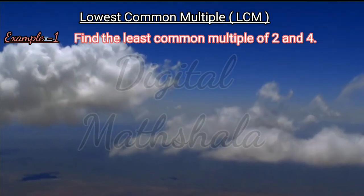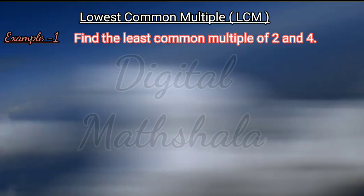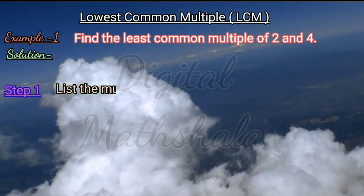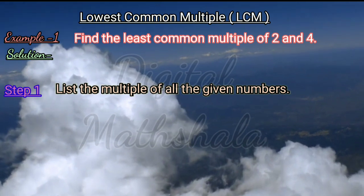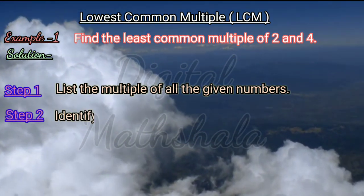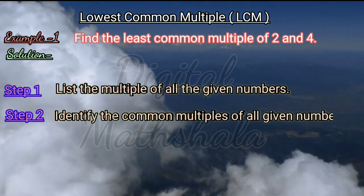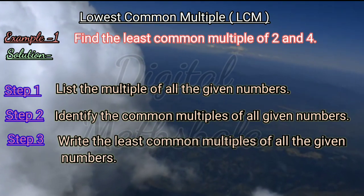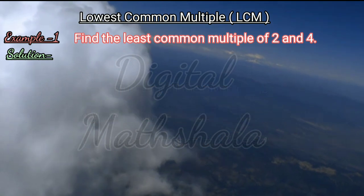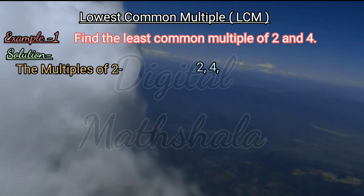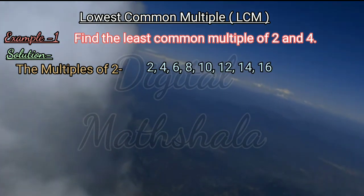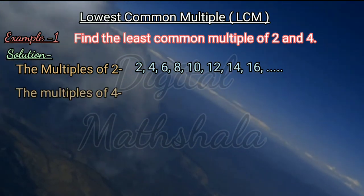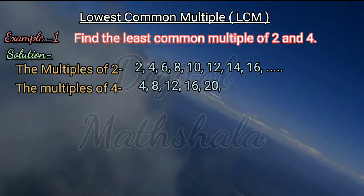To understand it better, let us solve an example: find the least common multiple of 2 and 4. We will follow a three-step process. Step 1: list the multiples of all the given numbers. Step 2: identify the common multiples. Step 3: write the least common multiple. Multiples of 2 are 2, 4, 6, 8, 10, 12, 14, 16 and so on. Multiples of 4 are 4, 8, 12, 16, 20 and so on.